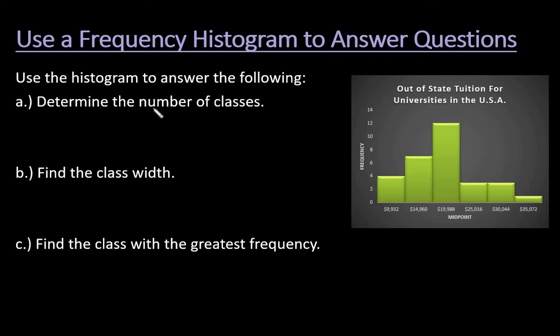The first thing we're going to look at is the number of classes. We're just going to count how many bars we have. I have one, two, three, four, five, and six. Since there are six different bars on our histogram, we can say there are six classes.